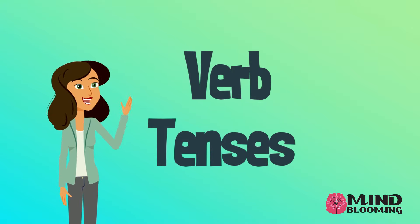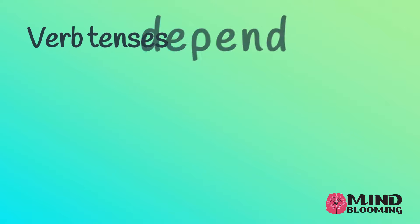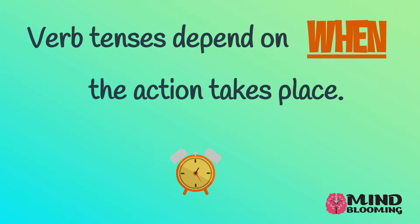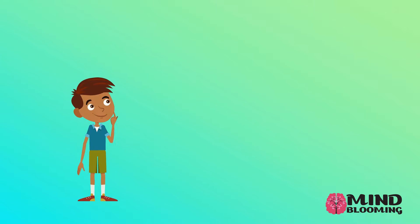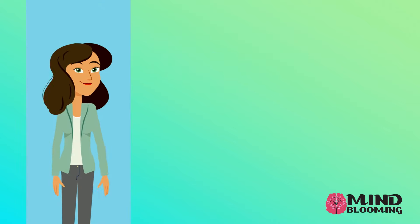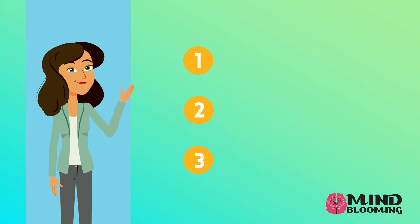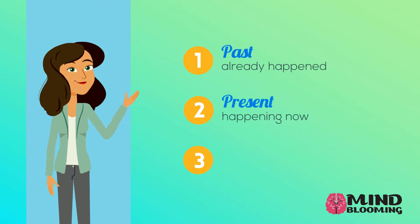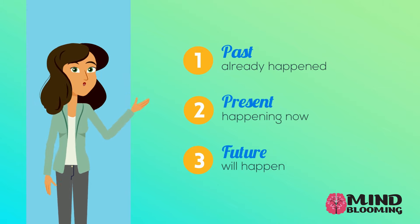Verb tenses. Verb tenses depend on when the action takes place. So, what are the verb tenses? There are three verb tenses: past, present, and future tense.